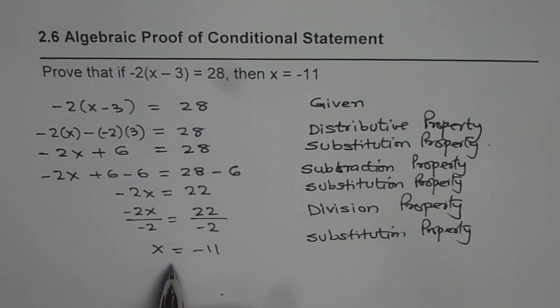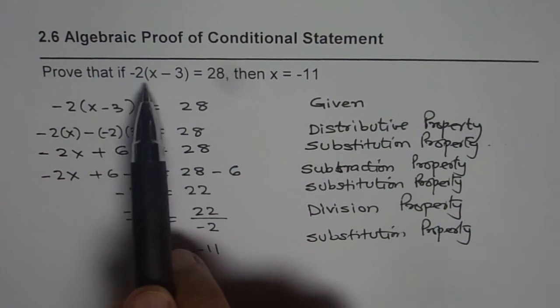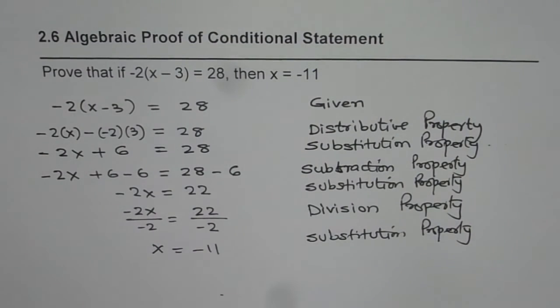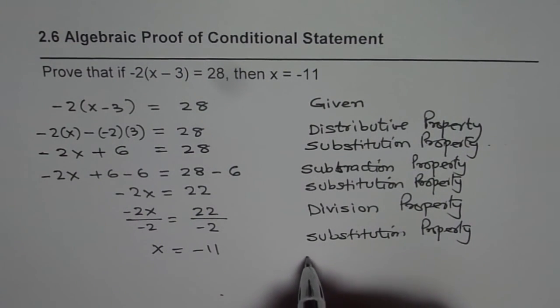That is how we prove that if -2(x - 3) = 28, then x = -11. That is the proof, so we can write hence proved.